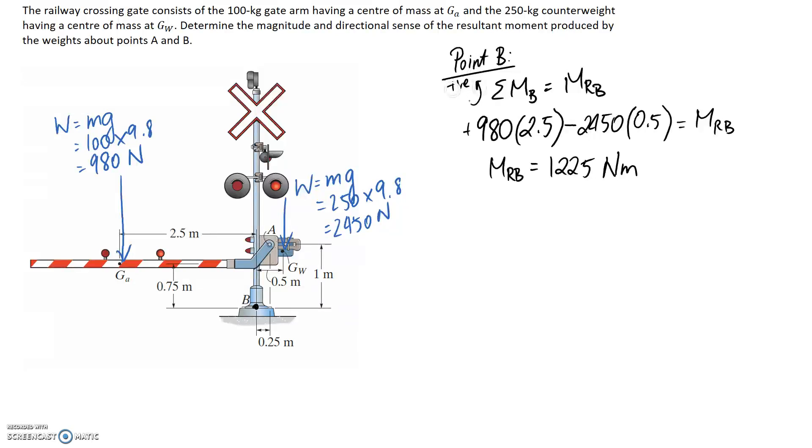If it comes out positive, it's in the positive direction as per our sign convention. If it comes out negative, then it's the opposite. This has come out positive, that means it's going to be in the anti-clockwise direction. So that's one answer.